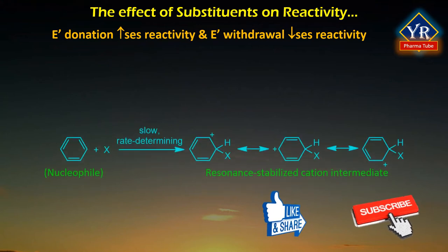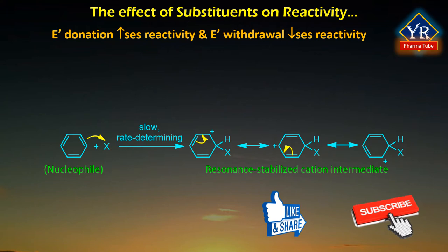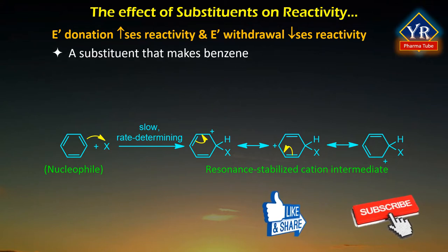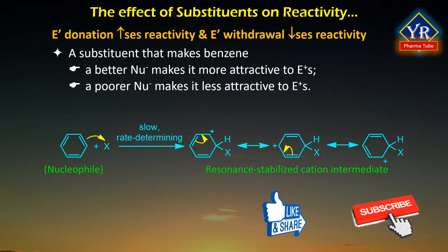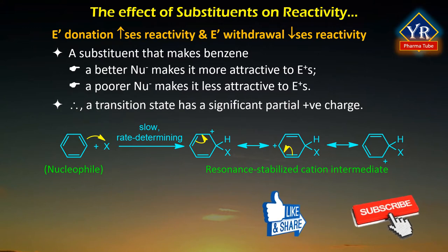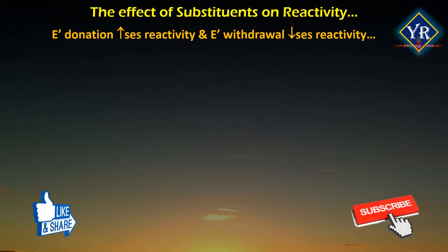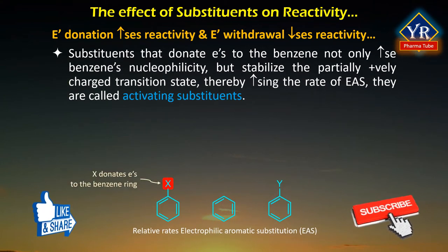As discussed in the previous videos, the slow step of an electrophilic aromatic substitution reaction is the addition of an electrophile to the nucleophilic aromatic ring to form a carbocation intermediate. A substituent that makes benzene a better nucleophile makes it more attractive to electrophiles, and a substituent that makes benzene a poorer nucleophile makes it less attractive to electrophiles. Because the transition state for the slow step is closer in energy to the carbocation intermediate, the transition state has a significant partial positive charge. Therefore, substituents that donate electrons to the benzene ring not only increase benzene's nucleophilicity but stabilize the partially positively charged transition state, thereby increasing the rate of electrophilic aromatic substitution. These are called activating substituents.